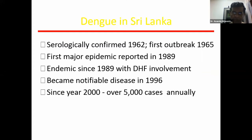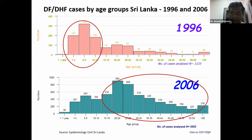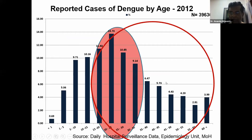The first outbreak of dengue was confirmed in Sri Lanka in 1992, and since then we have been having many outbreaks. Initially, dengue was mostly seen in the pediatric population. For example, in 1996, more than 70% of dengue patients were less than 15 years of age. However, this had been changing, and by 2012, more than 70% of patients were above 12 years of age, with about 50% within the working population from 15 to 50 years of age.